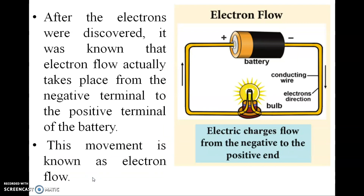After electrons were discovered, it was found that electron flow actually takes place from the negative terminal to the positive terminal of the battery. This movement is known as electron flow. So current is transmitted from the minus to the plus terminal.